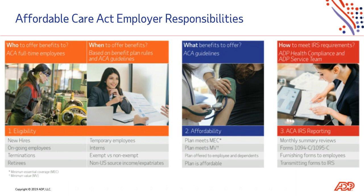Utilizing your data, Forms 1095C are created, printed, and mailed to your employees each January — January 31st is the standing deadline. Forms 1094C and 1095C are then electronically transmitted to the IRS. This final activity is referred to as the ACA IRS reporting or health coverage reporting activity.